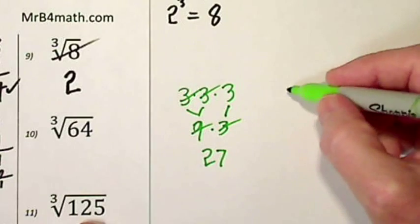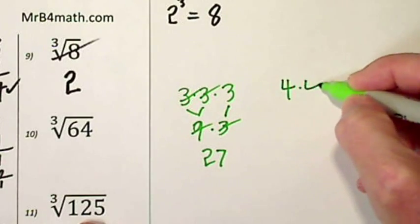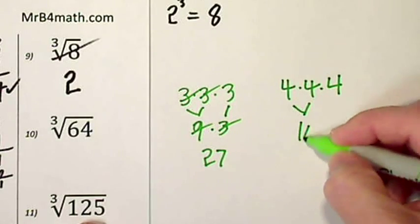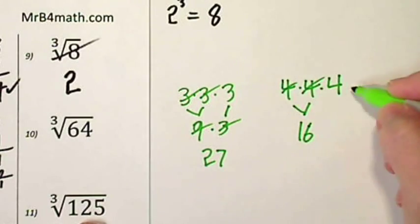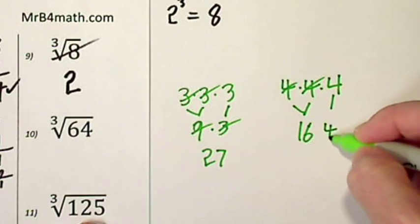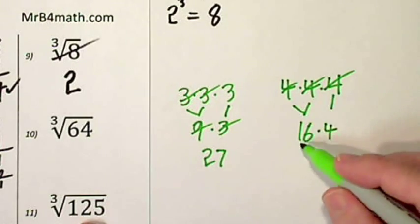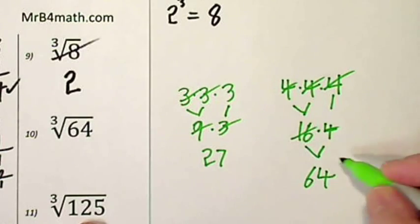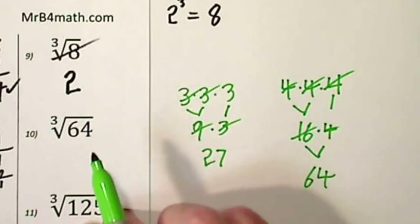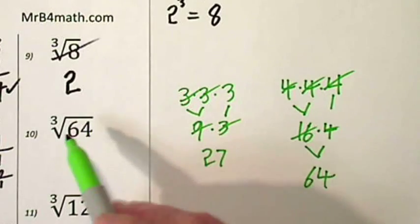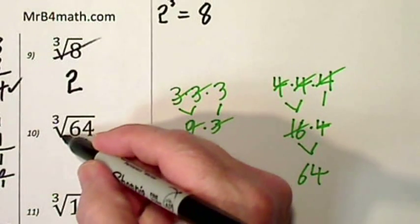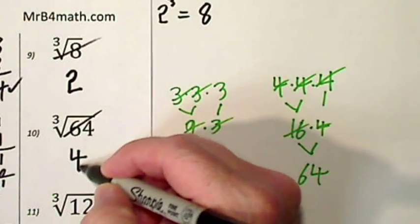We'll try 4 times 4 times 4. So these first two gives us 16. Bring down that 4. 16 times 4 is 64. And that's what we're looking for. So the cube root of 64 is 4.